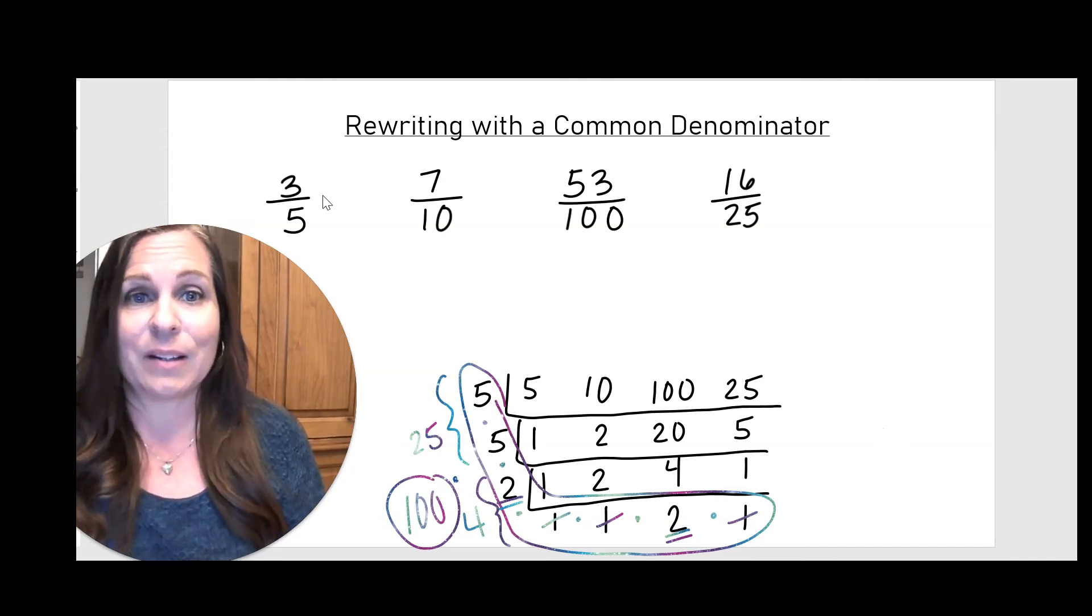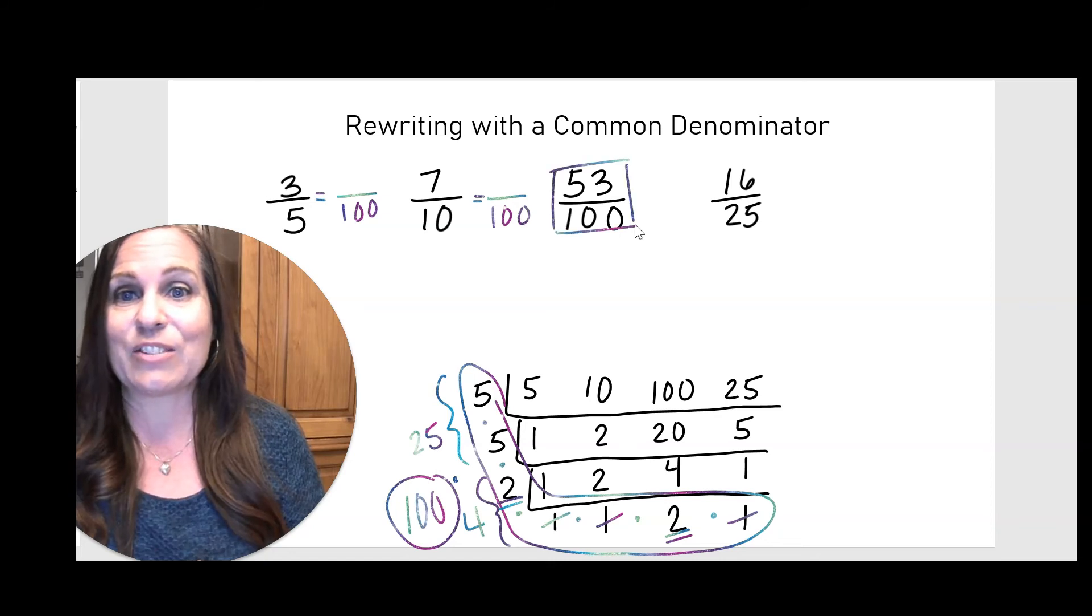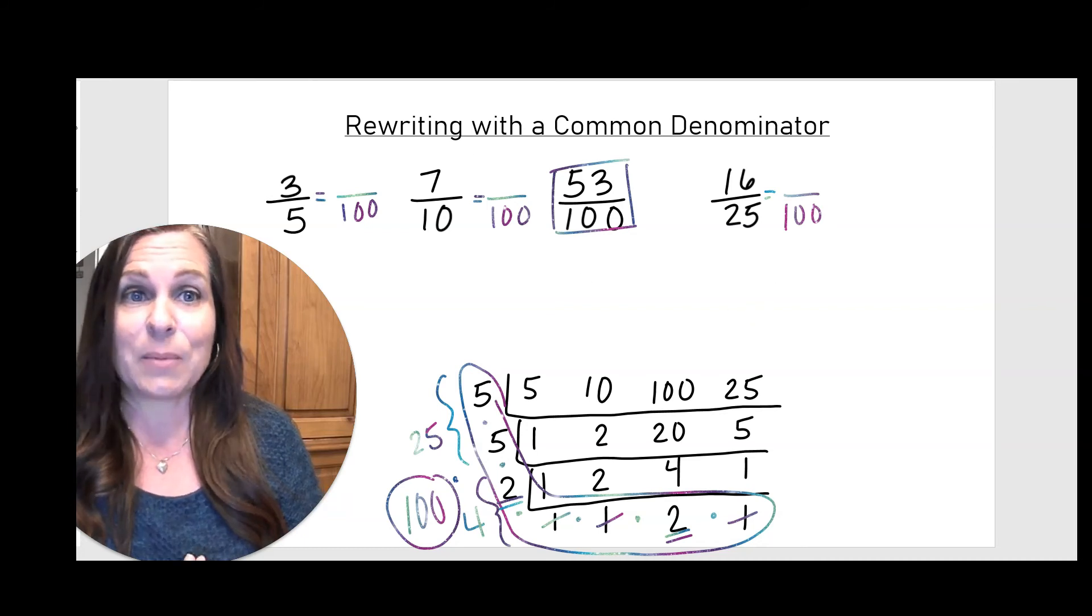Now I'm going to put it in place. So I need 100 here and here. This one already has a denominator of 100, so we're set on that one and here.